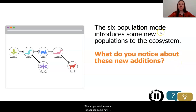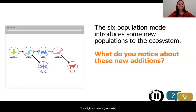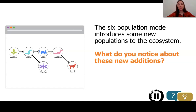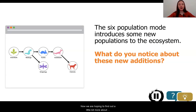We are going to look at and focus on organisms that are not directly connected to each other to see whether or not they can affect the population sizes of other populations. The six population mode introduces some new organisms or populations into the ecosystem. You might notice our green leaves, our wee bugs, and our furballs are still in the ecosystem. We have done a lot of testing with those populations and figured a lot out.